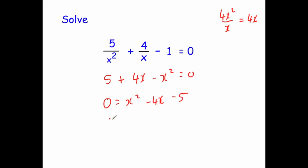Let's factorise that. We're looking for two numbers that multiply together to give us minus 5 and add together to give us minus 4. That's going to be minus 5 and 1 because if you multiply them you'll get minus 5, if you add them you'll get minus 4.